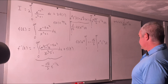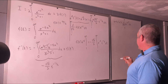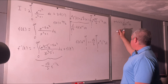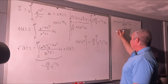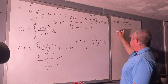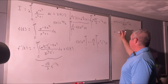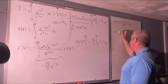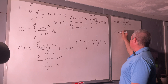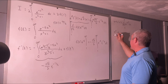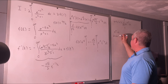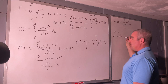Let's make the substitution. We'll use w, and say that w squared equals t, therefore 2w dw equals dt.